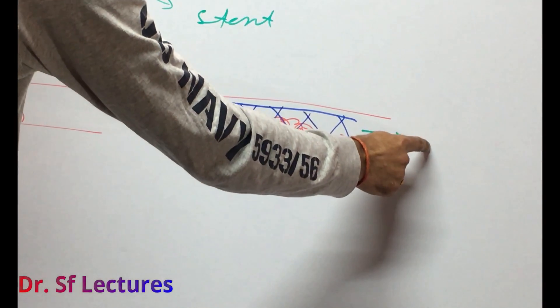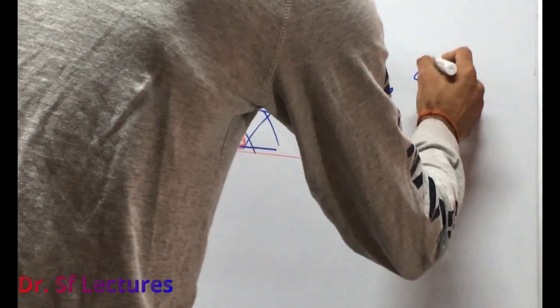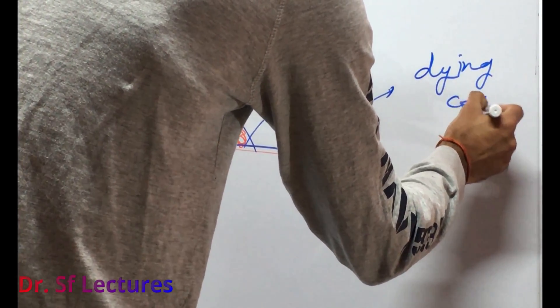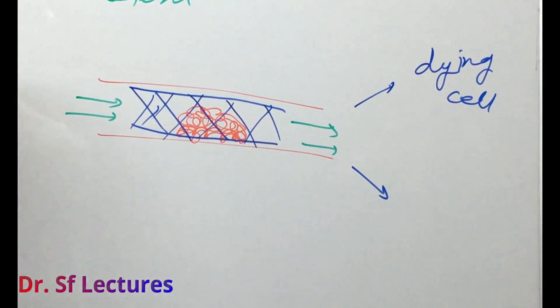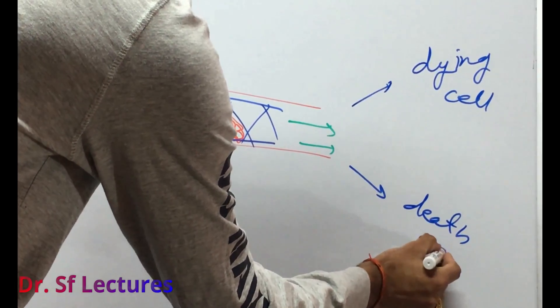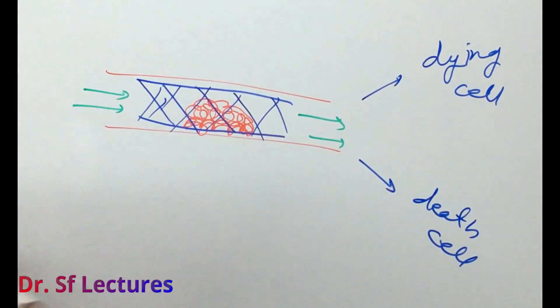For continuous blood supply. There are two types of dead cells. First one is dying cell - they are going to death. And second one is death cell. This is in necrosis and this one is ischemic.